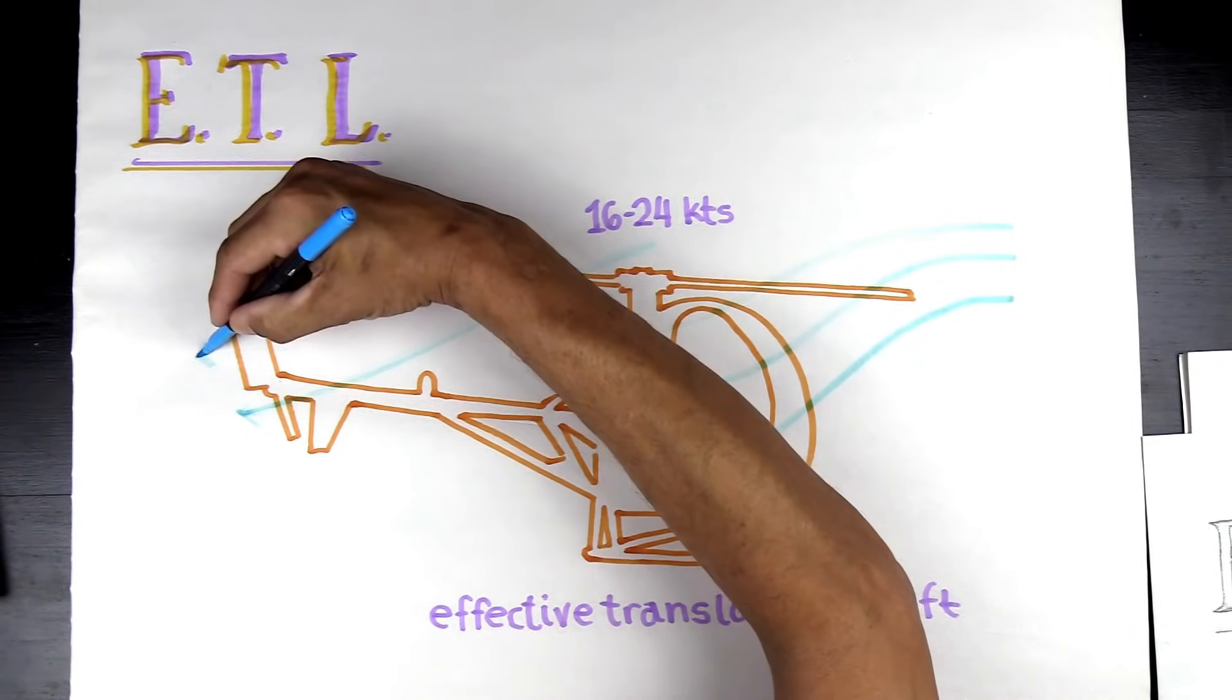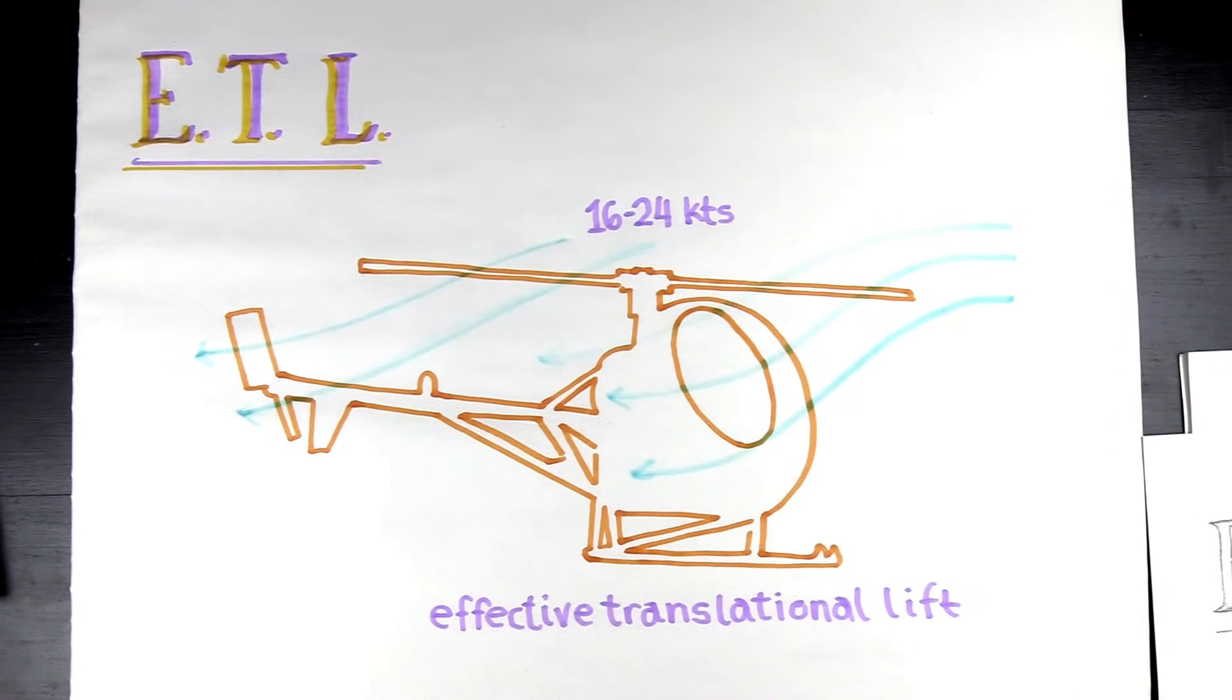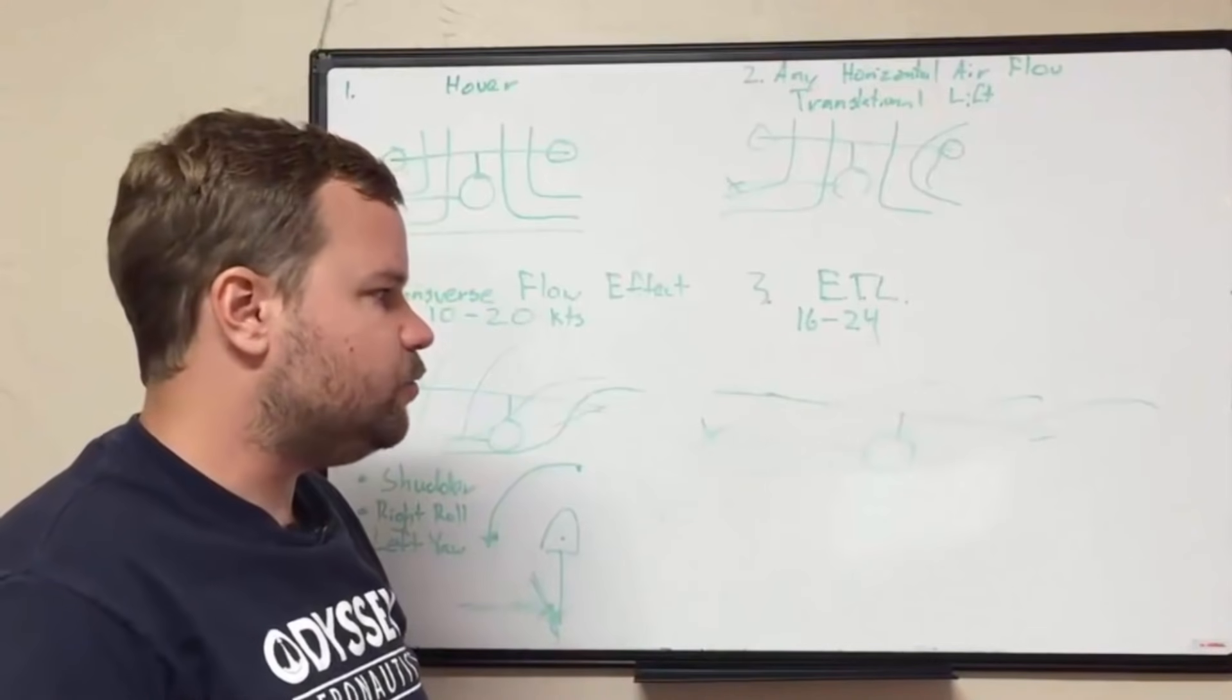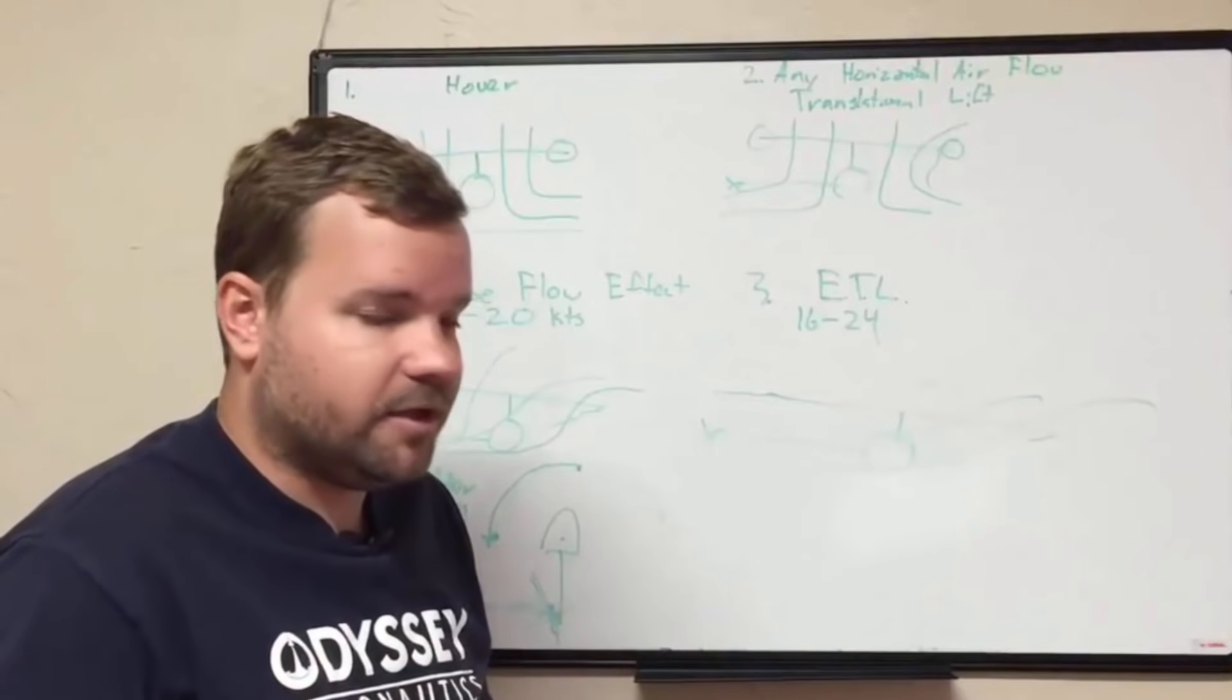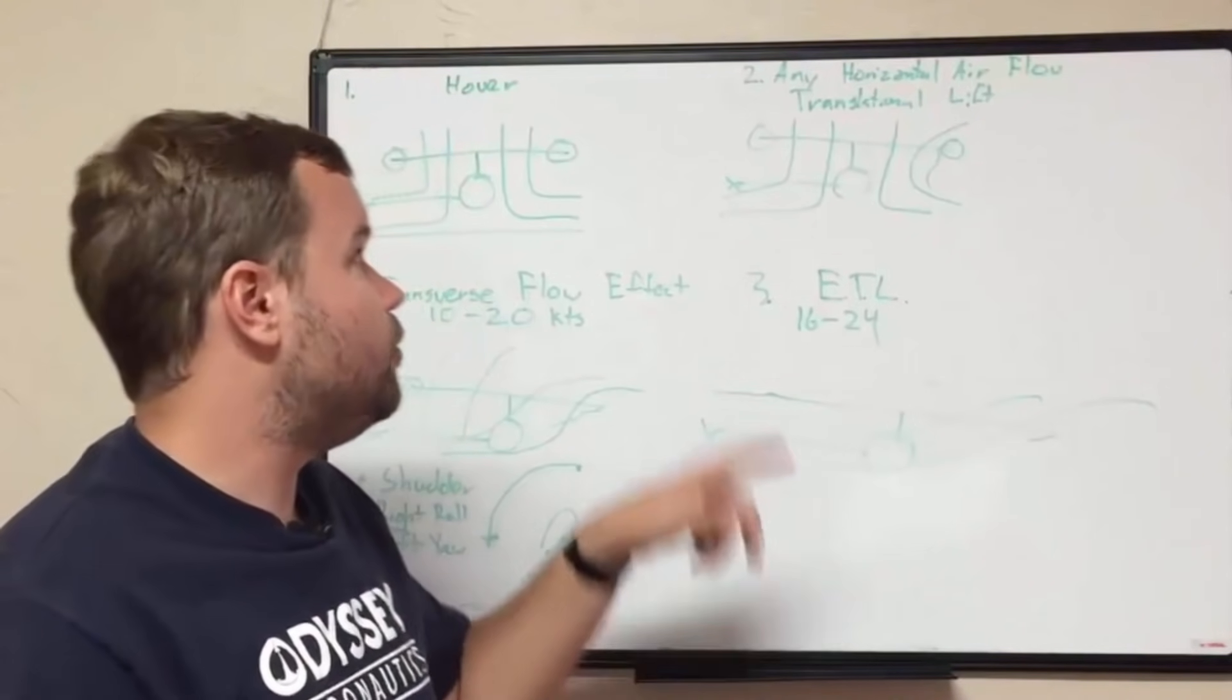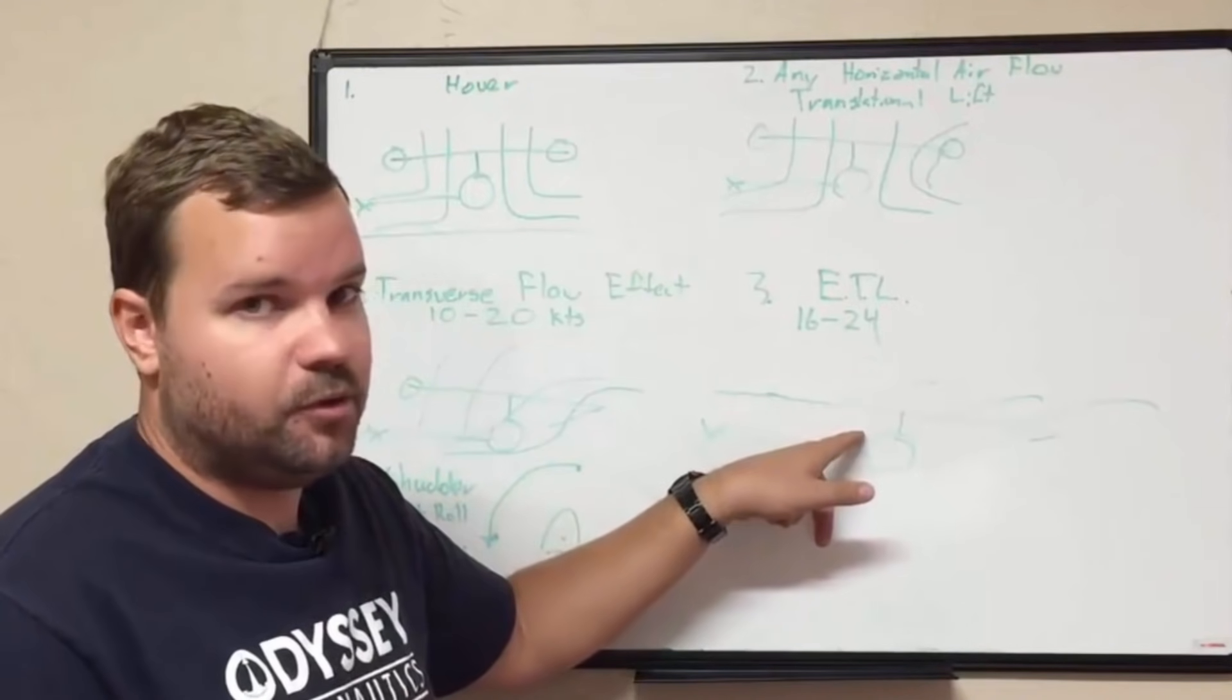Now we have our induced flow has been greatly decreased. Remember induced flow is bad, so we get rid of that, we get more lift. Our vortices are gone - again those are bad, we get rid of those, we get more lift. And this is where it requires a lot less power because the rotor system is more efficient. You can back off the collective and you can cruise along. This is why hovering takes a lot more power than it does to actually fly forward.